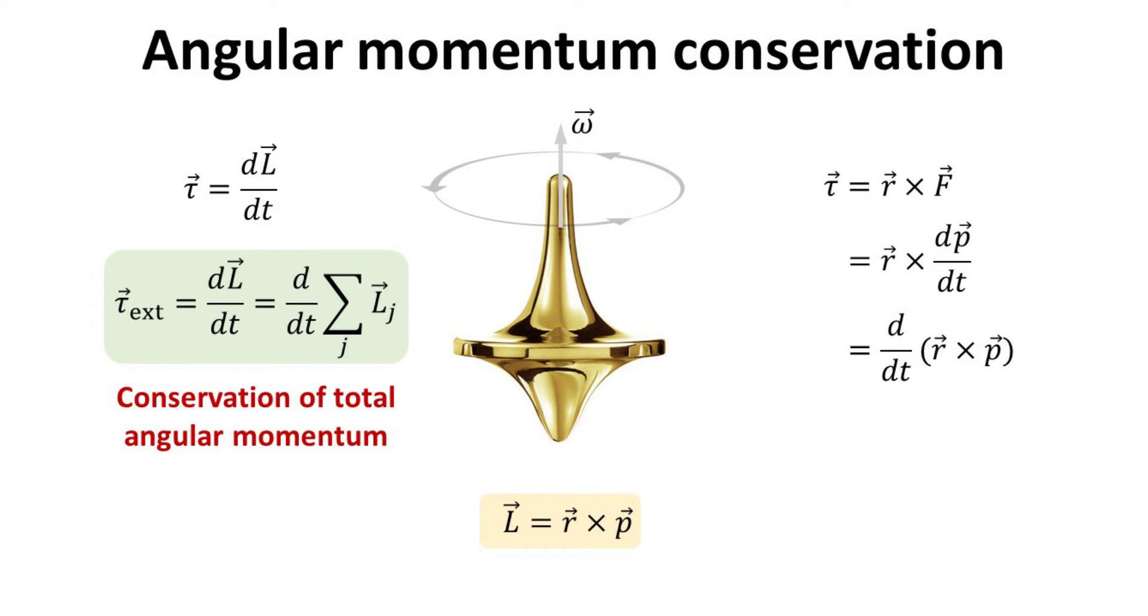In the absence of any externally applied torque, the total angular momentum must then be conserved. The rigid body will continue in its angular motion defined by L, unless acted upon by an external torque. Worth repeating, this equation is also known as Newton's second law for angular motion.